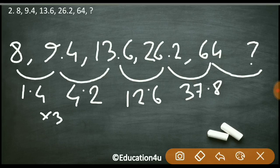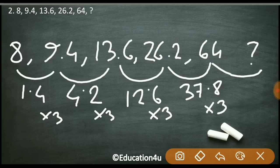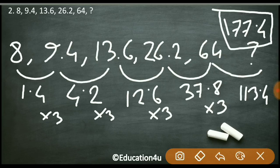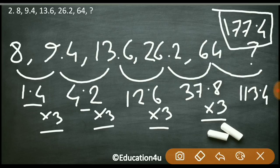The relation is: 1.4 multiplied by 3 gives 4.2, 4.2 multiplied by 3 gives 12.6, and 12.6 multiplied by 3 gives 37.8. So the next number is 37.8 multiplied by 3, which equals 113.4. Therefore, 113.4 + 64 = 177.4 is the answer.